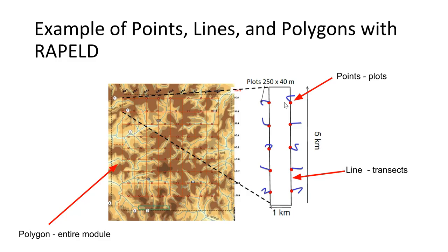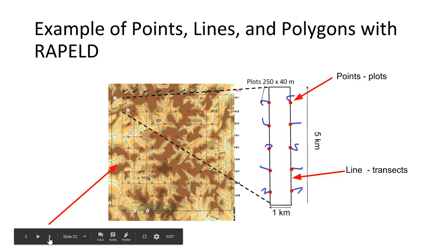For our monitoring, these are examples of points, lines, and polygons within this RAPELD method. Our plots would be represented as points. Our transects that our plots go along would be represented as lines. And this entire area where we're sampling, our module, would be represented as a polygon. So this would all be vector data - points, lines, and polygons.